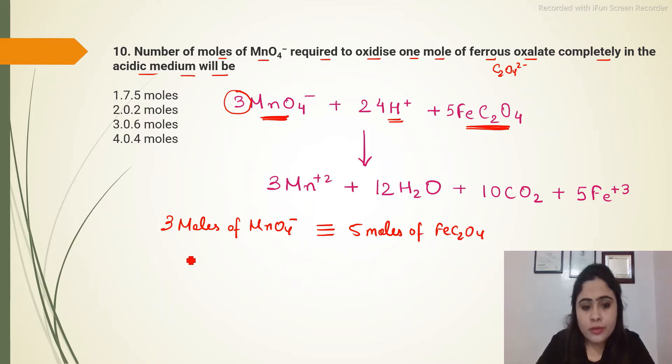So how many moles of KMnO4 will be required to oxidize 1 mole of FeC2O4? Just simple unitary method we will do and we will take out x into 5 will be equal to 1 into 3, so x will be equal to 3 by 5, so 3 by 5 is 0.6.